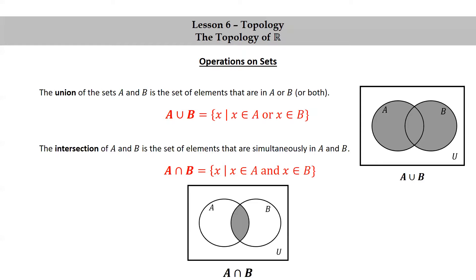Here's a Venn diagram representing the intersection of A and B. You can see we only shade the part that is common to both A and B.